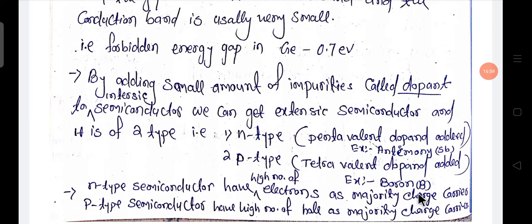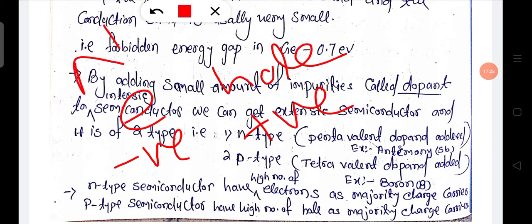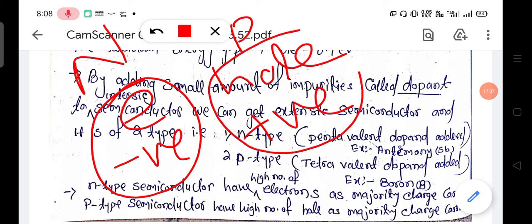Majority charge carrier means the number of a particular charge carrier is high. In a semiconductor there are two charge carriers: one is the electron, which is negatively charged, and one is the hole, which is positively charged. In N-type, the electron is more, so the electron is the majority carrier. In P-type, the hole is more, so in P-type the majority carrier is the hole. Remember this.